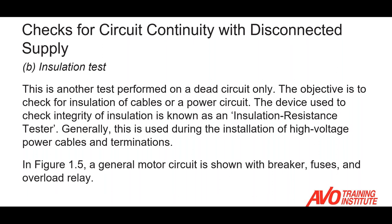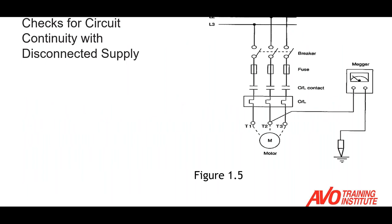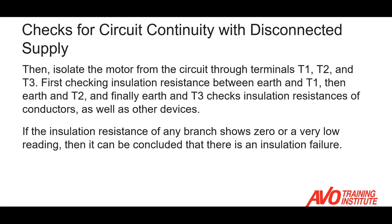Another check associated with continuity is the insulation test, which also needs to be performed on a de-energized circuit. The whole objective is to check the integrity of the insulation of the power cables and control wiring — this is known as an insulation resistance test. Looking at this slide, we have a typical power circuit for a three-phase motor with the overcurrent device isolated from the circuit as well as the motor, allowing us to check the integrity of each phase going to that motor. We want to check from terminal T1 and T2 to ground to make sure we don't have a path to earth.